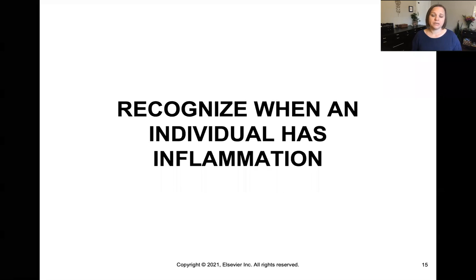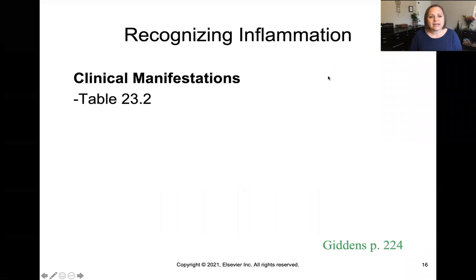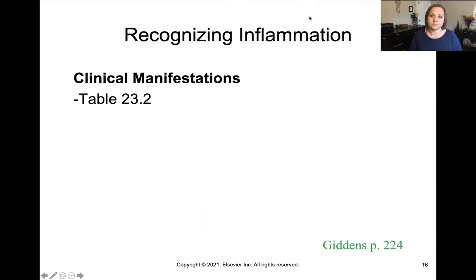What would you notice when an individual has inflammation? There's a table in Giddens 23.2, page 224, about the clinical manifestations of inflammation. Local manifestations include localized swelling, pain, heat to the touch, redness, and possibly exudate. Serous exudate is clear fluid; fibrous exudate is cloudy due to extra protein; purulent exudate is pus-like; and hemorrhagic means bloody exudate. All four types are different kinds of discharge you can notice from localized inflammation.